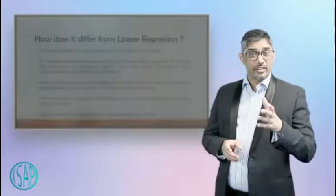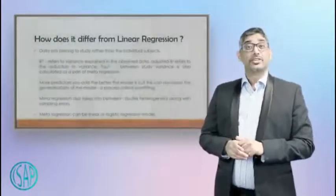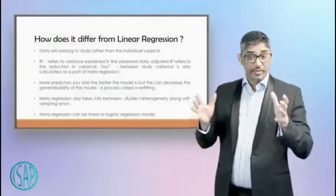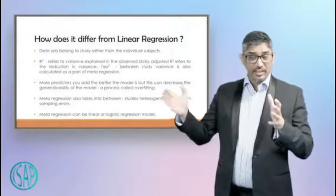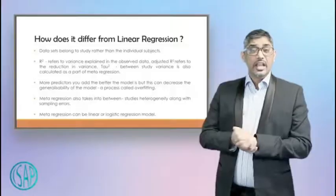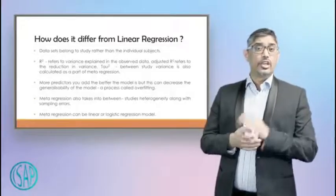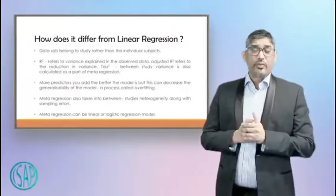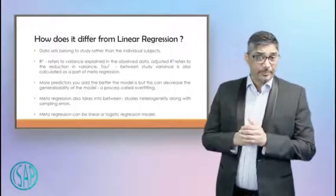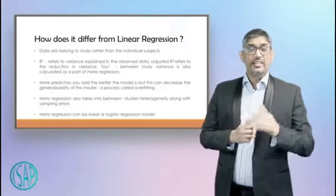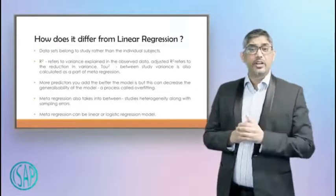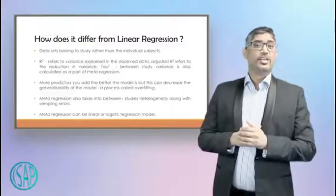Meta-regression takes both linear and logistic regression equations into account. How does it differ from linear regression? In a linear regression, you keep adding the variables from the individual participants' data. In meta-regression, the datasets belong to the study rather than individual subjects.